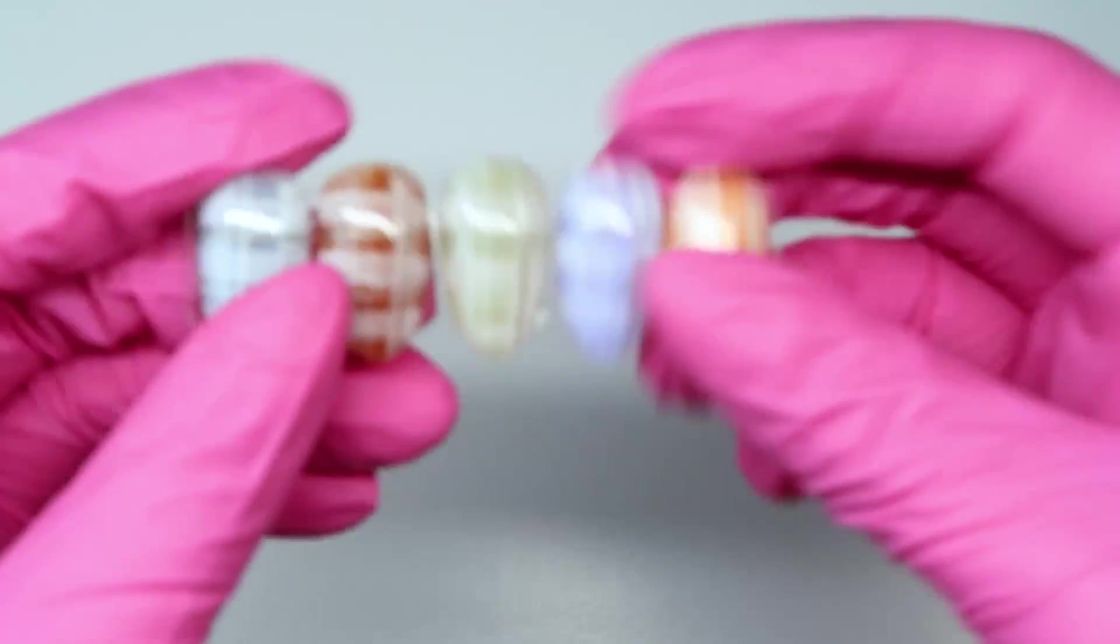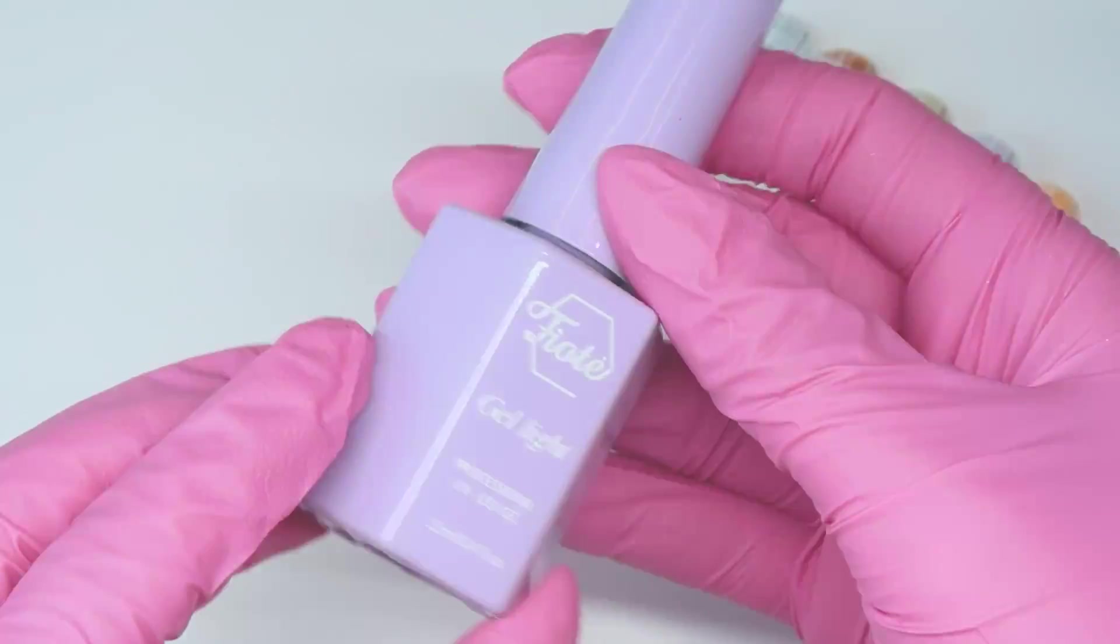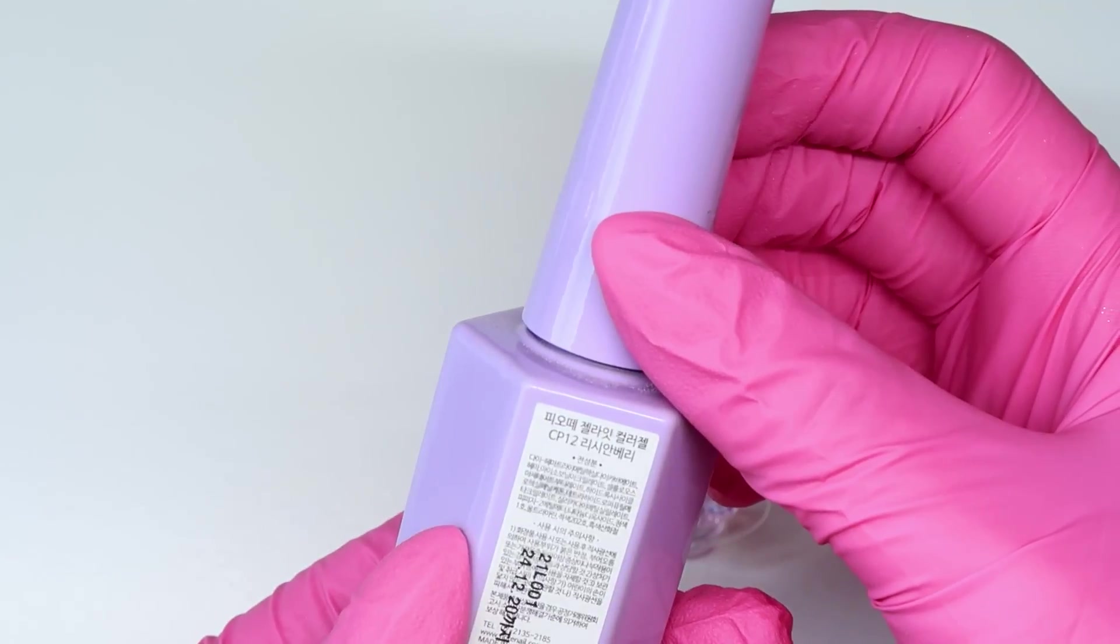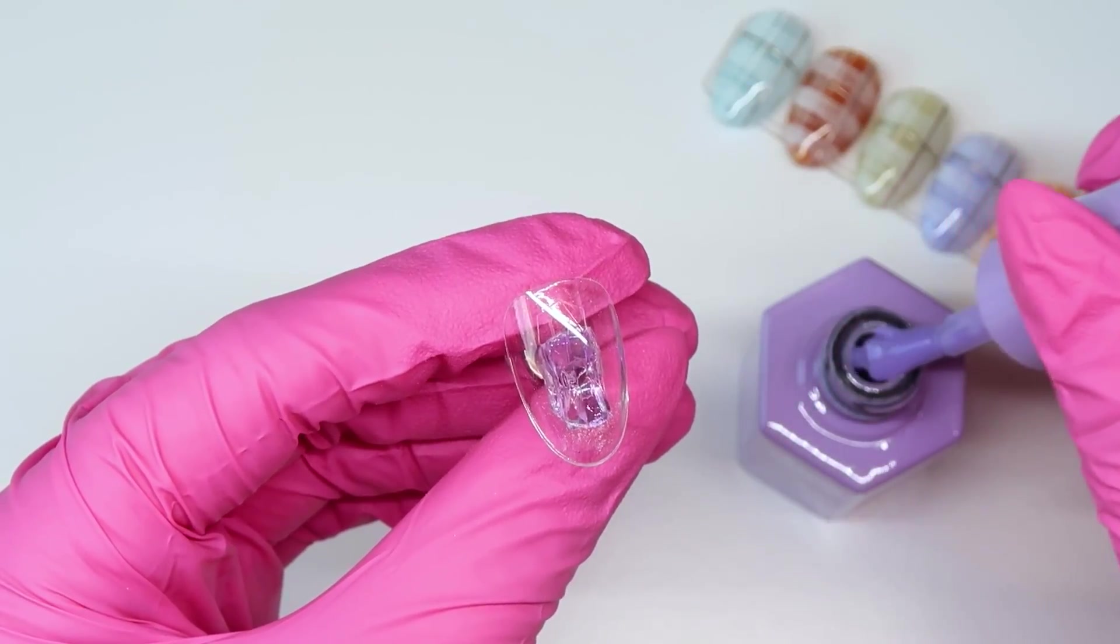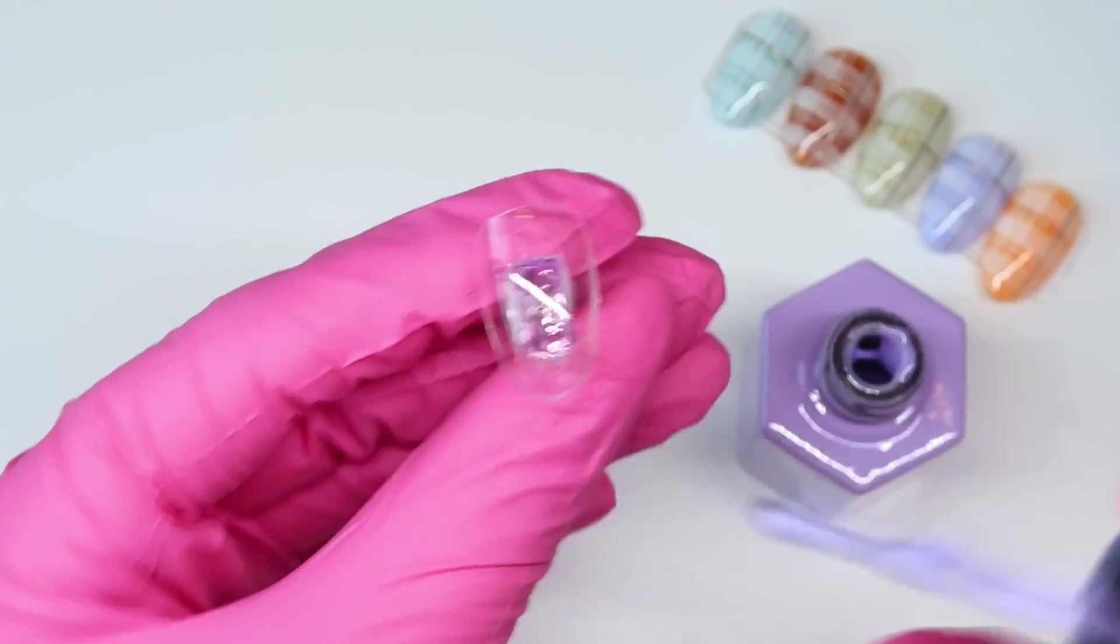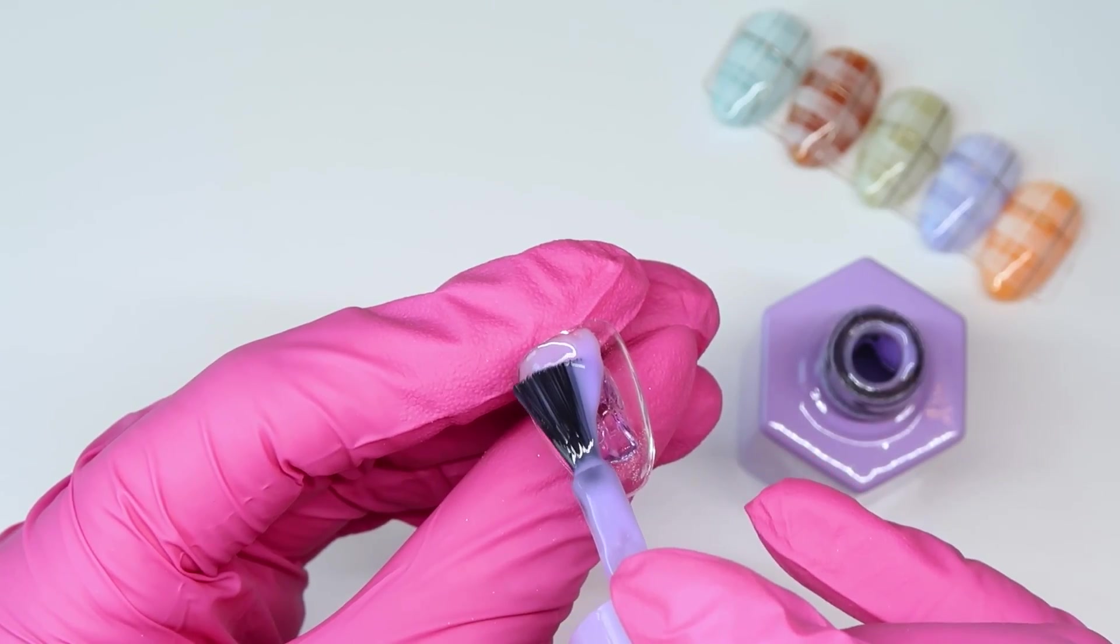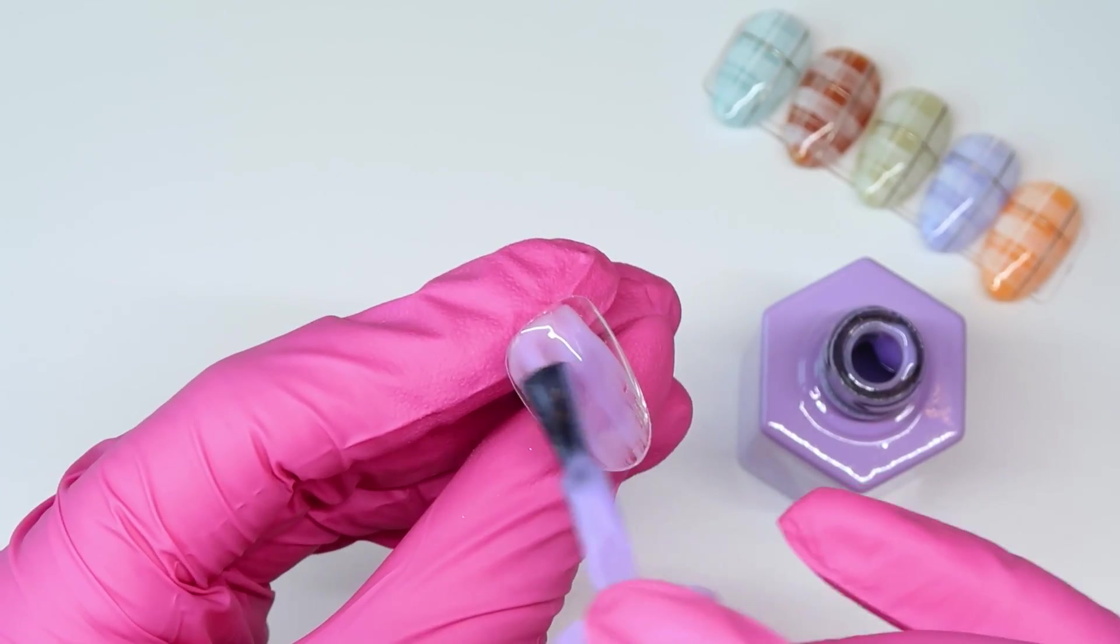So it's going to get started super easy. I grabbed this color here, this is CP12. I'm just going to apply one coat of this over the nail and you'll see that milky look to these.